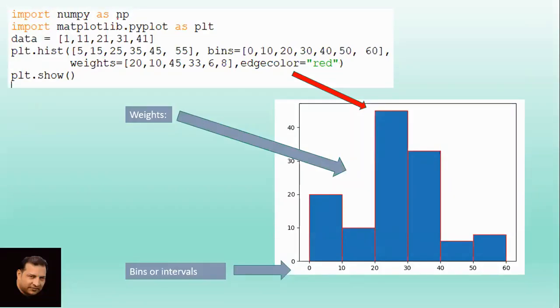Now let's see this first example. Import numpy as np, import matplotlib.pyplot as plt. Data equals I have taken some data here, but it is not being used because here I have not written data. There are different data sequences given: 5, 15, 25, 35, 45, 55. Bins: 0, 10, 20, 30, 40, 50, 60. Weights: 20, 10, 45 - random weights, and edge color as red.